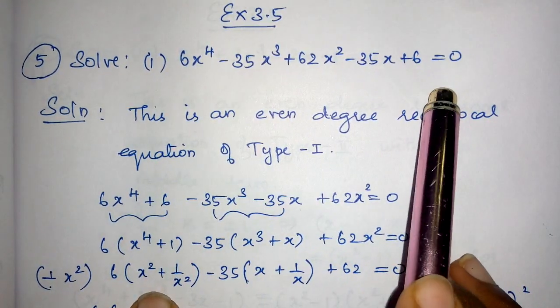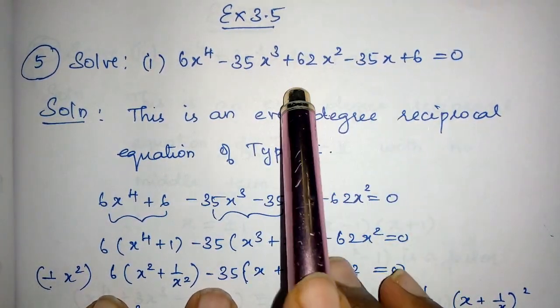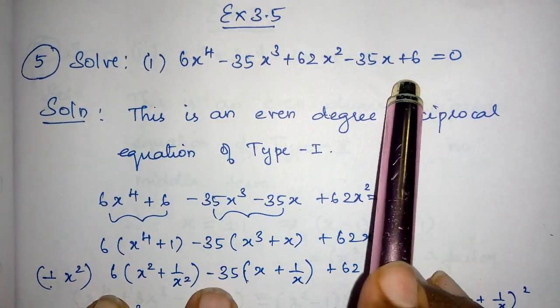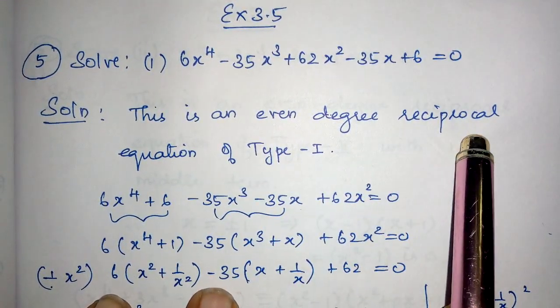Definitely this is a reciprocal equation. The coefficients are 6, 6, -35, -35, and 62. The signs are the same, so it's type 1. The leading degree is 4, an even degree reciprocal equation.